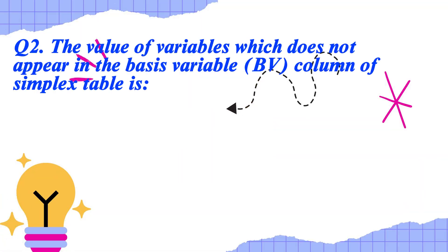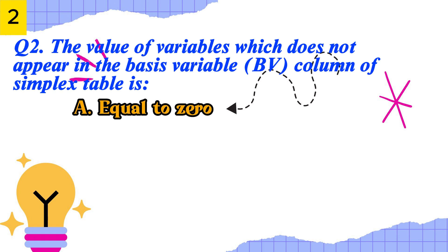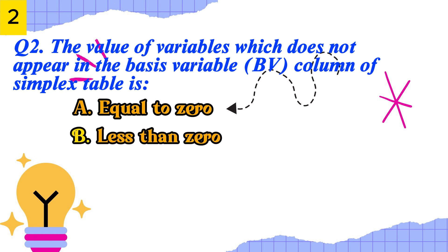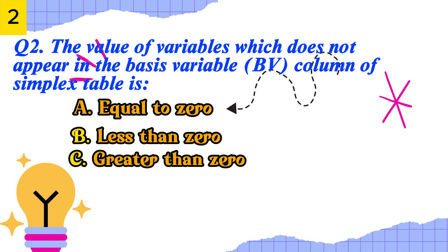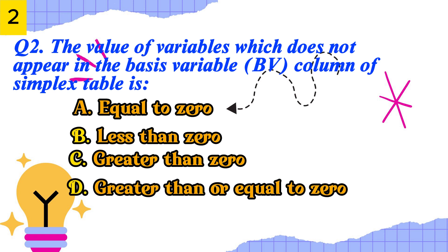Q2. The value of variables which does not appear in the basis variable BV column of simplex table: A. equal to zero. B. less than zero. C. greater than zero. D. greater than or equal to zero.